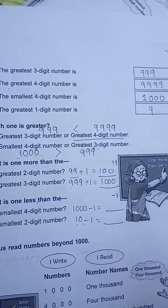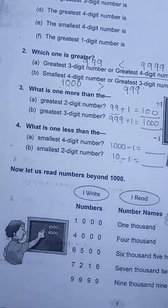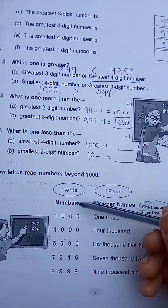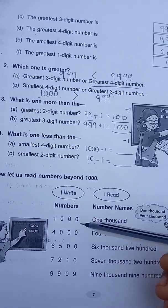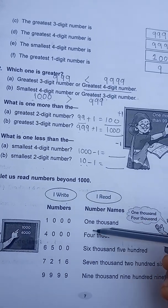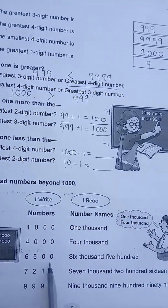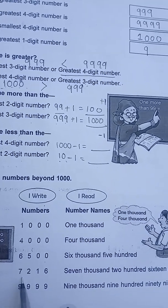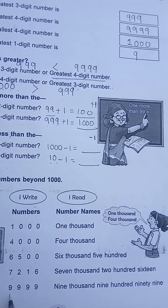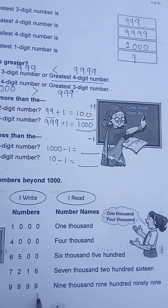I will not write the answer — you will have to write it. Now say the numbers and number names: one thousand, four thousand, six thousand five hundred, seven thousand two hundred and sixteen, nine thousand nine hundred and ninety-nine.